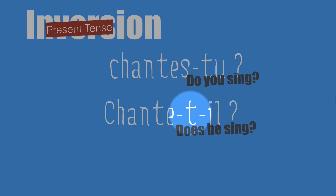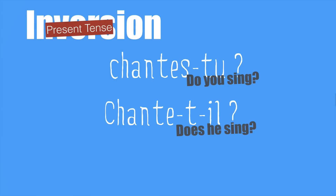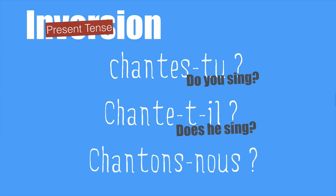That's why, when you've got a subject and a verb with two vowels — here the letter E, and here the letter I — you need the letter T before to improve the pronunciation and say 'Chante-t-il?' Does he sing? Okay, and it's a rule. 'Chantons-nous?' — Do we sing?